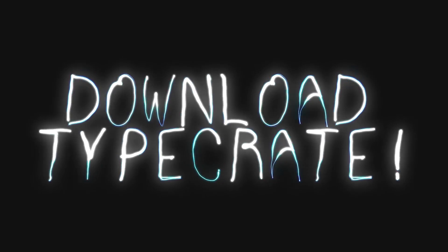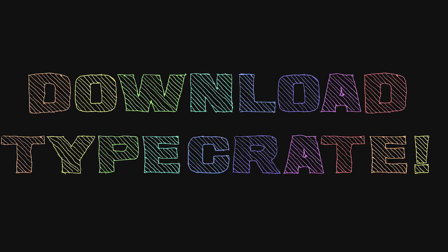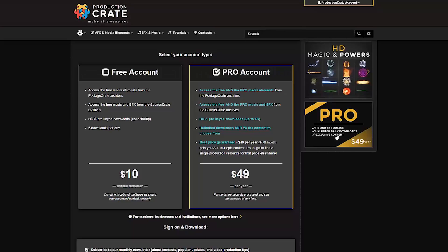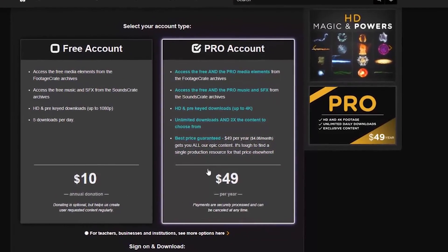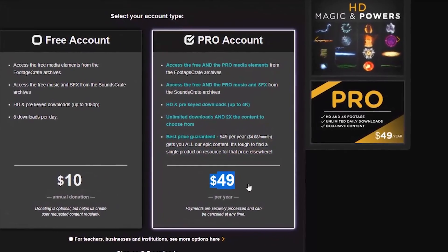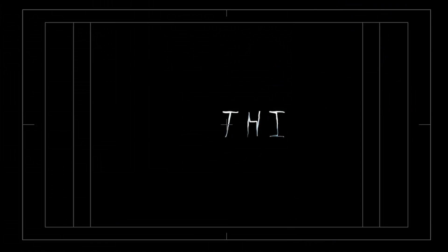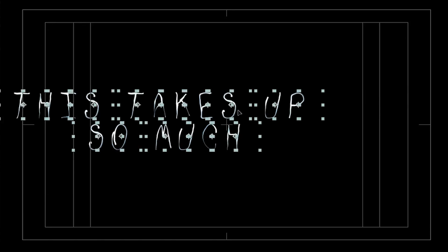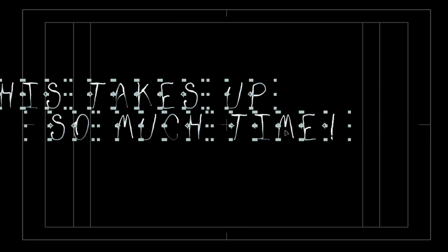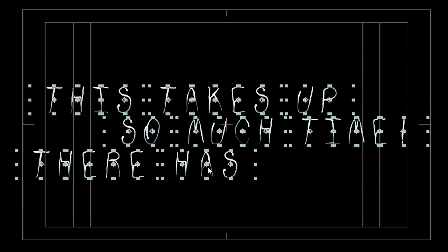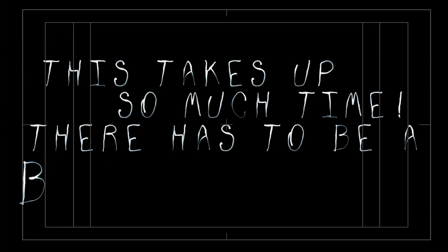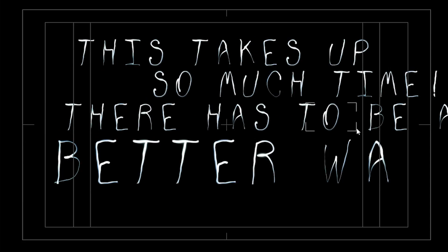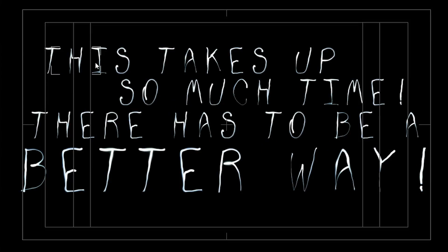This is only available to pro users. Right now, you can be a pro for just $49 a year. Before this script, we had to manually move and position characters from the Type Kits to create words, and that was a really tedious process. We decided to change all that nonsense, so the Type Crate script was born.